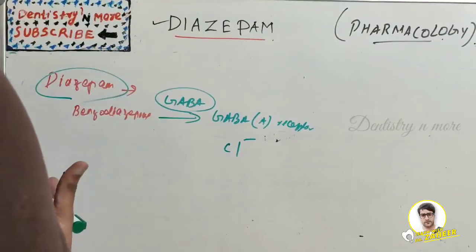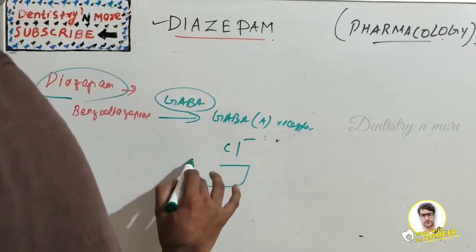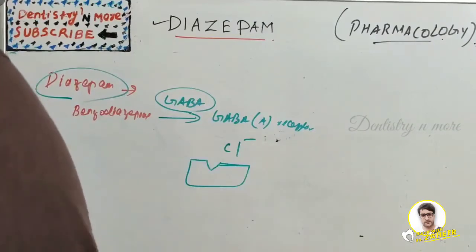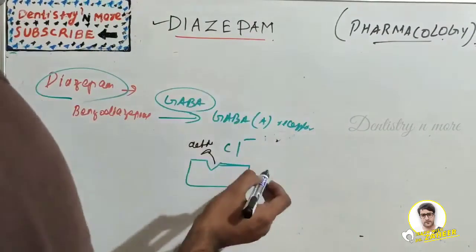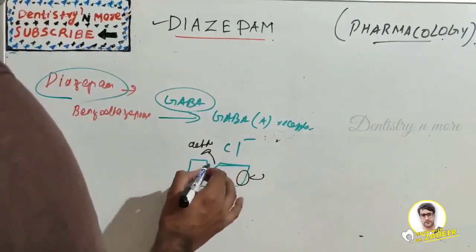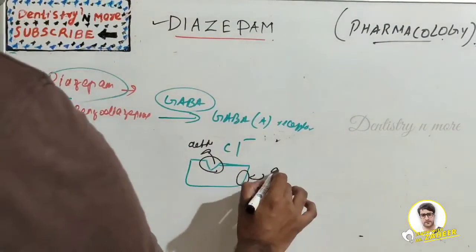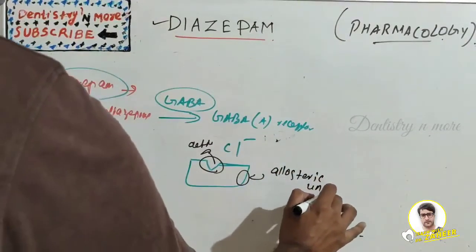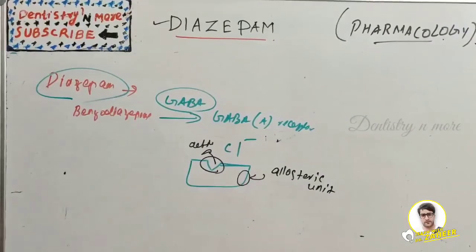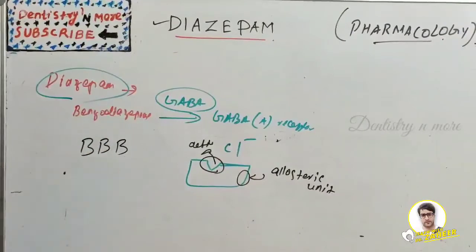The GABA-A receptor contains a benzodiazepine binding site as an allosteric modulatory unit. Every receptor has an active site, but if a molecule attaches to any part other than the active site and still brings out an action, it is known as an allosteric unit. Diazepam crosses the blood-brain barrier to elicit its pharmacological effect.